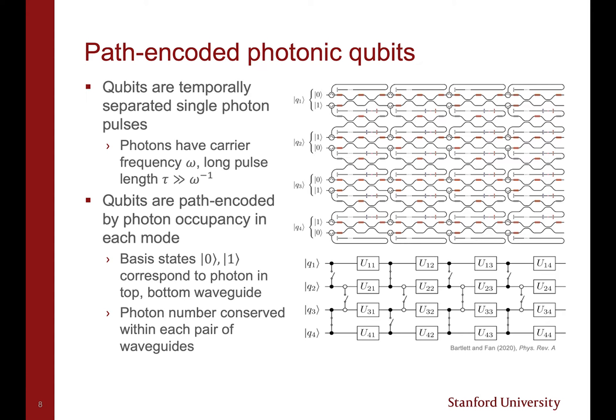Qubits are represented as temporally separated single photon pulses which are sequentially injected into the inputs of the device. Each photon is spectrally narrow about a carrier frequency ω and has a long pulse width. Qubits are path-encoded by the photon number within each pair of optical modes. The basis states |0⟩ and |1⟩ for each qubit correspond to measuring a photon in the top or bottom waveguide of each pair.